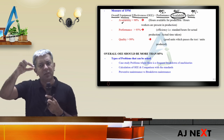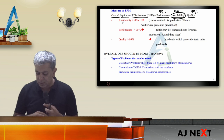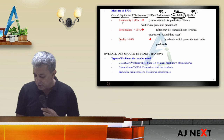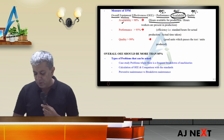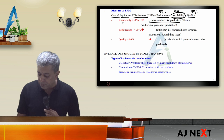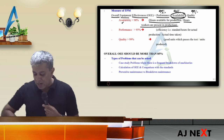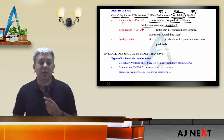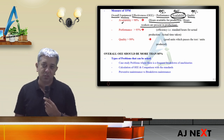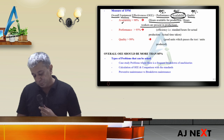Any loss of time within the working hours reduces availability. The formula is: hours available for production, divided by hours workers are present in production.